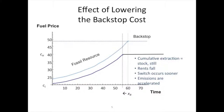If the price path didn't change, we'd switch over once the backstop is cheaper, but then at this price path we wouldn't have exhausted the resource completely. Then that stock constraint wouldn't be binding, meaning lambda can't be as high as it was before — so the rent falls, the whole price path falls, and we're still exhausting the resource completely. As long as there's positive rent, you're exhausting the resource completely, but you're doing it faster — switching over to the backstop sooner and exhausting the resource faster.